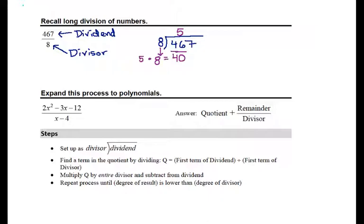multiply it by our divisor, and as we go down, we subtract to give us a 6 here, and we go ahead and bring down the next digit, which is a 7.